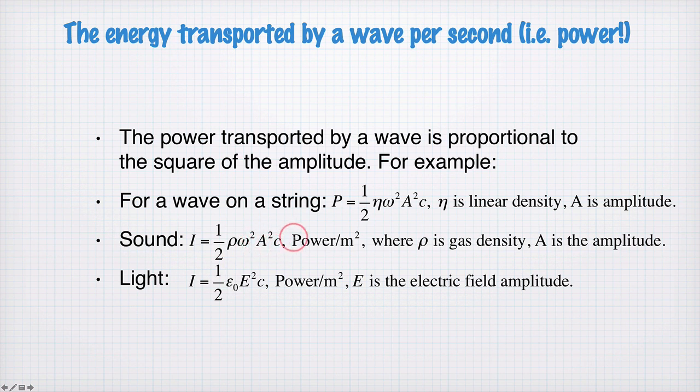So these two things, the square of the amplitude and the speed c, are common through all these equations. The bits out the front, though, can vary depending on the kind of wave that you have.